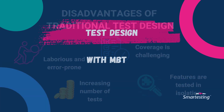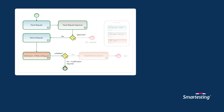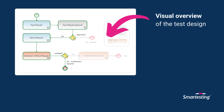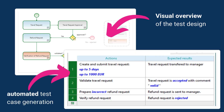In a model-based approach to testing, you draw workflows instead of manually writing test cases. Those workflows represent your test design. In fact, you visually specify what you want to check and in which order. A model-based testing tool then collects the information from the workflows and automatically generates test cases that respect the business rules you put in the workflow.